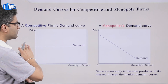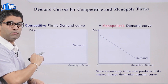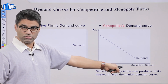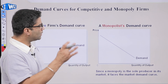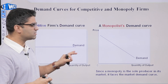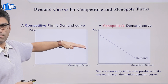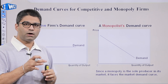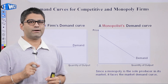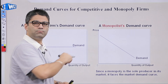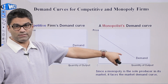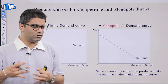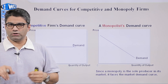A perfectly competitive firm faces a horizontal demand curve and has no control of market price. A monopolist faces the market demand curve and chooses how much to produce, consequently deciding what price to charge. Monopolistic competition is somewhere in between — they won't have zero control over price, but they also won't face the entire market demand curve. The demand curve they face is more elastic and downward sloping, and the marginal revenue curve will be slightly lower than the demand curve, not as far below as for a monopolist.